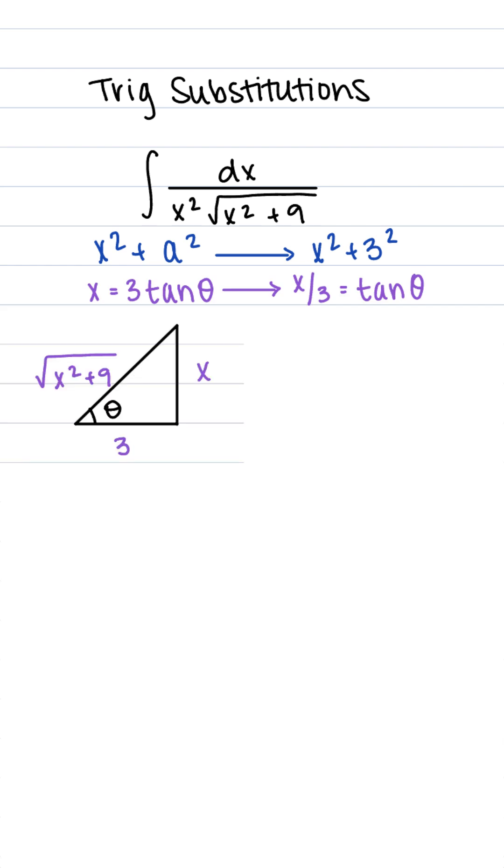In order to use a triangle, we can divide that 3 over so we can really see the opposite over adjacent, and here we can solve our remaining hypotenuse using the Pythagorean theorem.